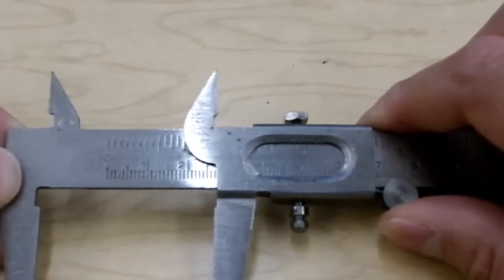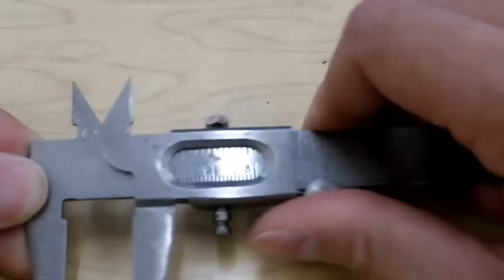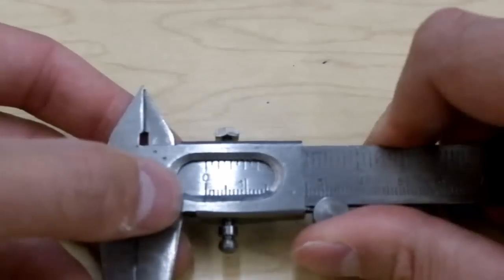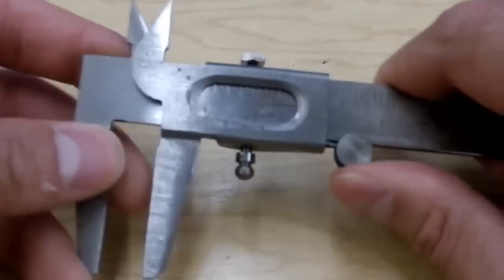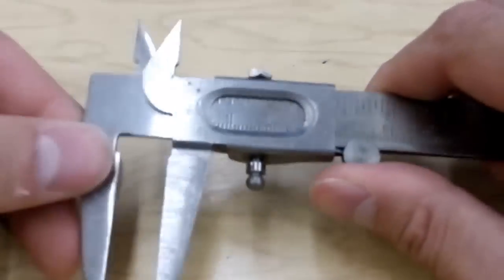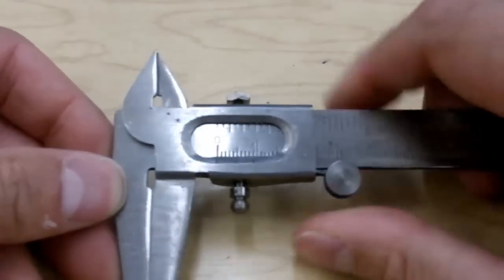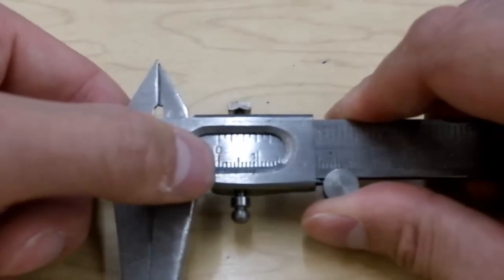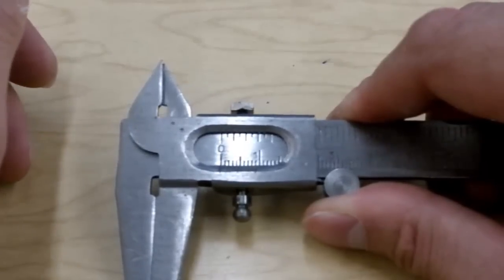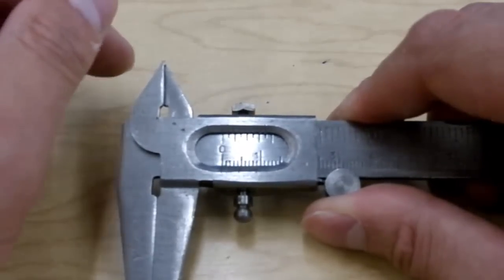The last thing you want to check with a vernier caliper is that your zero reading is good. And you just have to close the jaws up. Sometimes you want to wipe off the grime. And you just take a look, close it in. Make sure that when it should read zero, it is in fact reading zero.